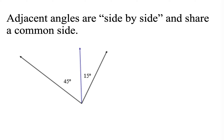Adjacent angles are side by side and share a common side. In this picture, this part is the common side, and that's what makes them adjacent.